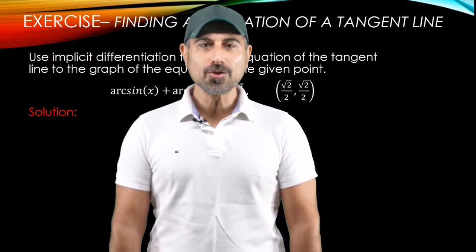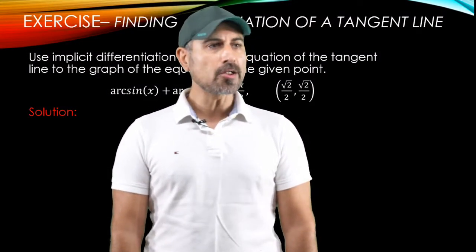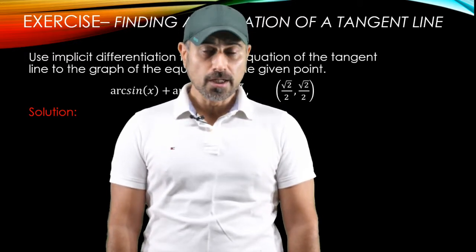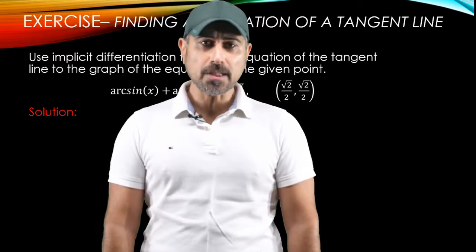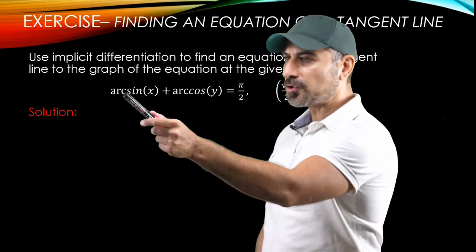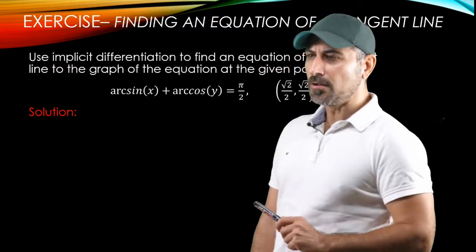Hello, welcome back. In this video, we're going to go over an exercise where we're going to find a slope of a tangent line for a function expressed implicitly, and the function has the inverse sine and inverse cosine function involved in it.